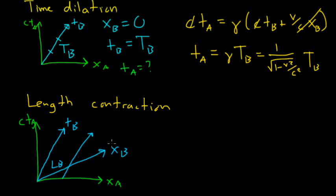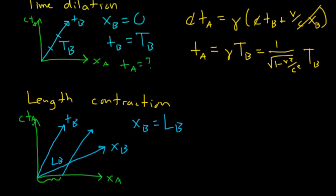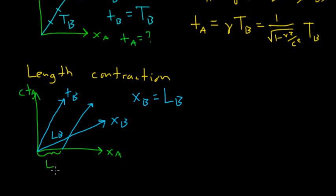The length between these two observers as measured by B is measured along their position axis. So we have xB is going to equal LB. We know what position B says this is at, but what we want to find is this distance, and we're going to call that LA.